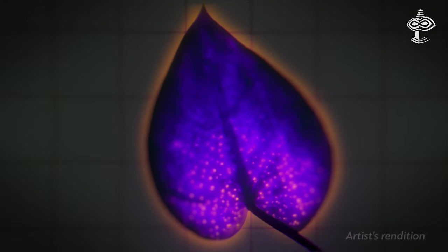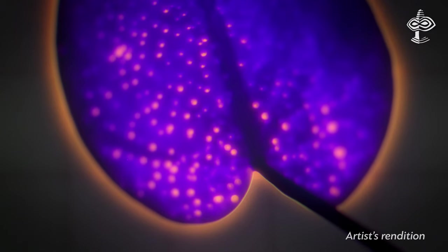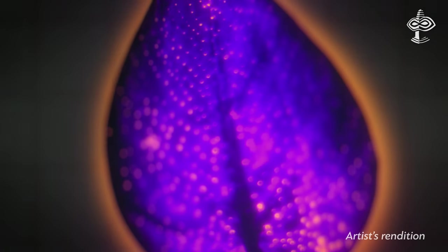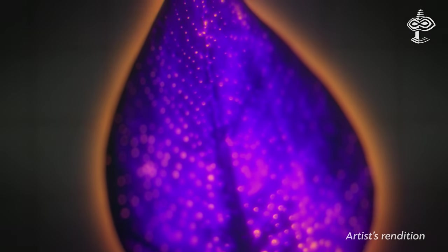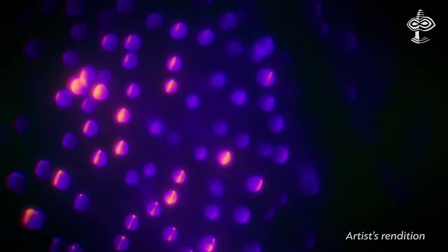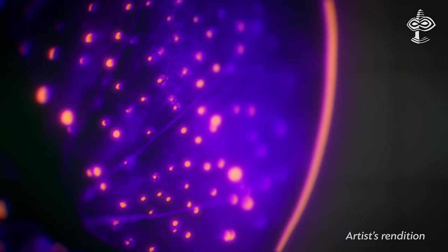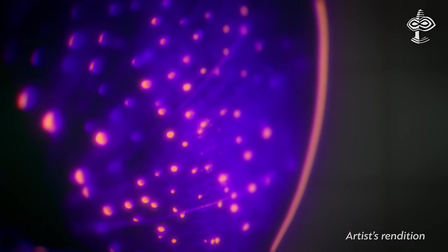Besides the wave properties, plasma can also emit light in different ways. For example, in gas-discharged plasma, light emission is the main way to know if it exists and to get information about the particles in it.